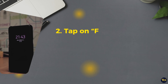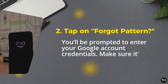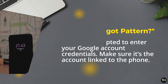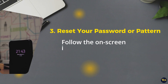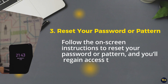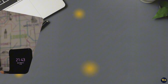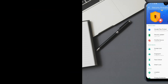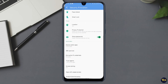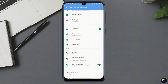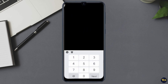Number two: tap on Forgot Pattern. You'll be prompted to enter your Google account credentials — make sure it is the account linked to the phone. Number three: reset your password or pattern. Follow the on-screen instructions to reset your password or pattern and you will regain access to your device. This method is straightforward but is available only on older Android versions. If you don't see the Forgot Pattern option, don't worry — there are still more ways.